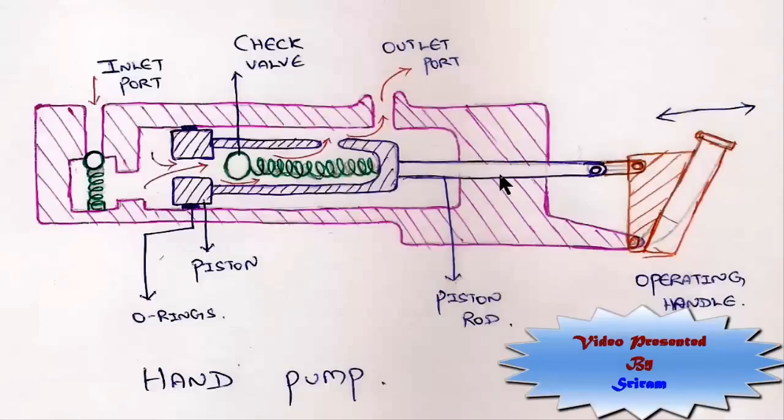There is a piston rod which reciprocates forward and aft, to and fro inside this cylinder through a gland packing which I have not shown in this diagram. And here you can attach a handle and then pump it.